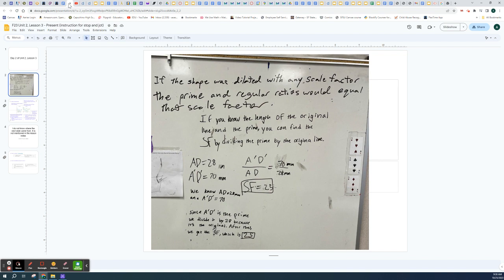And you wrote down, what did you notice? So this is from one of my classes. This is what they noticed. If the shape was dilated with any scale factor, the prime and regular ratios would equal the scale factor. And then they continued to say, if you know the length of the original line and the prime, you can find the scale factor by dividing the prime by the original line. And then they gave an example. Okay, so that's kind of in a nutshell what you should have figured out.